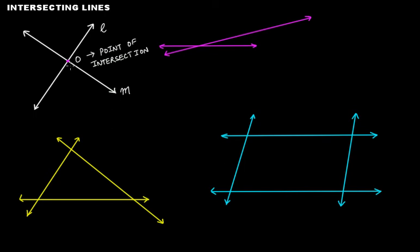At this point of intersection, these two lines are crossing each other, and they are therefore called intersecting lines. In the second figure, line L and line M are also crossing each other at a point — let's call it point O. This point O is the point of intersection, and these two lines are also intersecting lines.